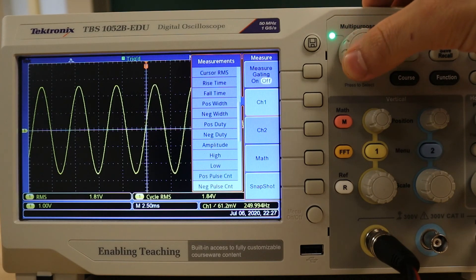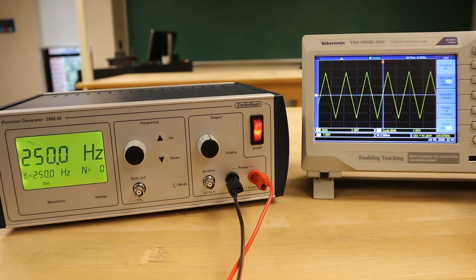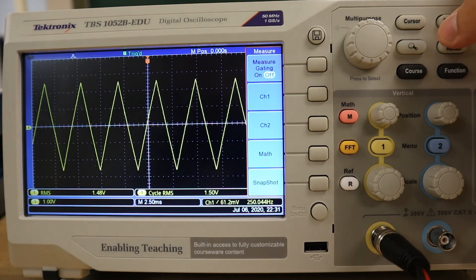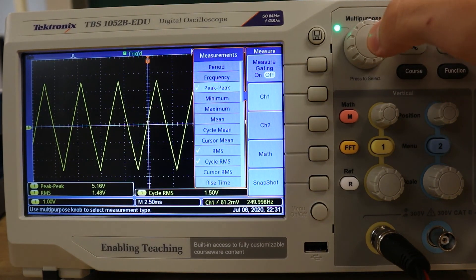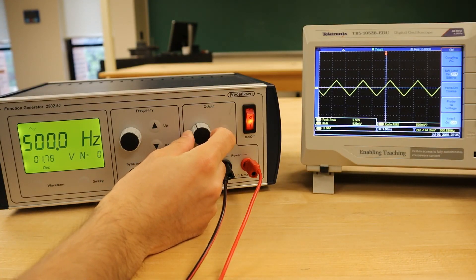For this last procedure, we will change our waveform to something a little more pointed, as we look for a correlation between the cycle RMS voltage and the peak-to-peak voltage. But with the automated measuring utilities activated, this is as simple as adjusting the magnitude on the function generator and reading off the results on the oscilloscope.